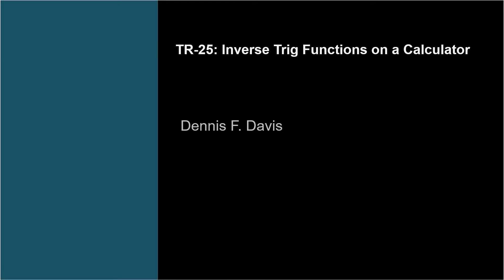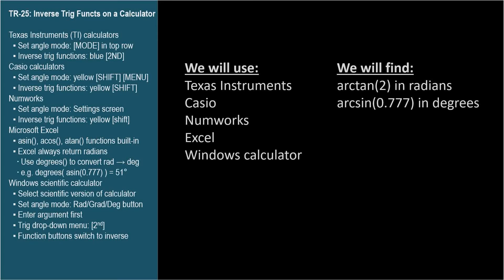We covered trig functions on a calculator in video TR-16. Now for inverse trig functions. I'll cover the same five calculators, and we'll compute the same two angles using each: arctan of 2, getting back the angle in radians, and arcsine of 0.777, getting back the angle in degrees.